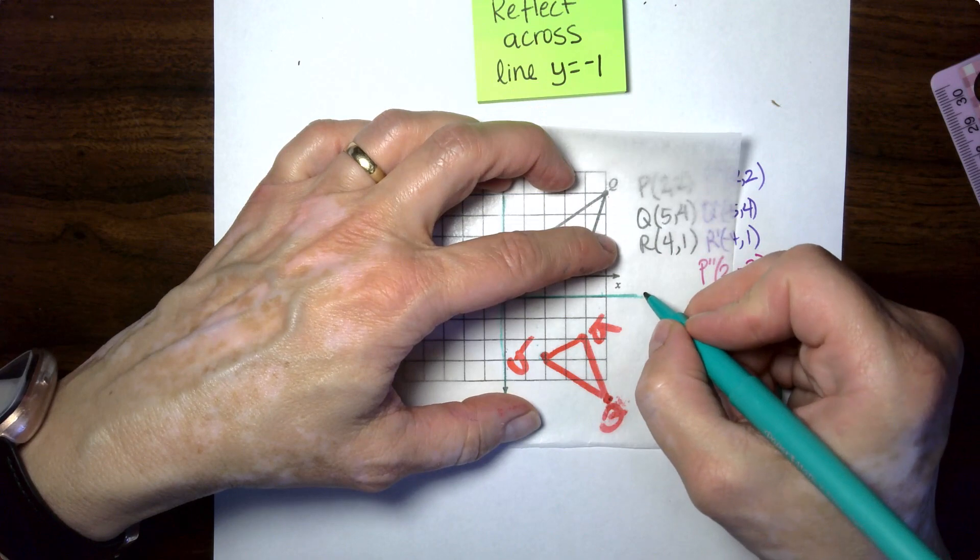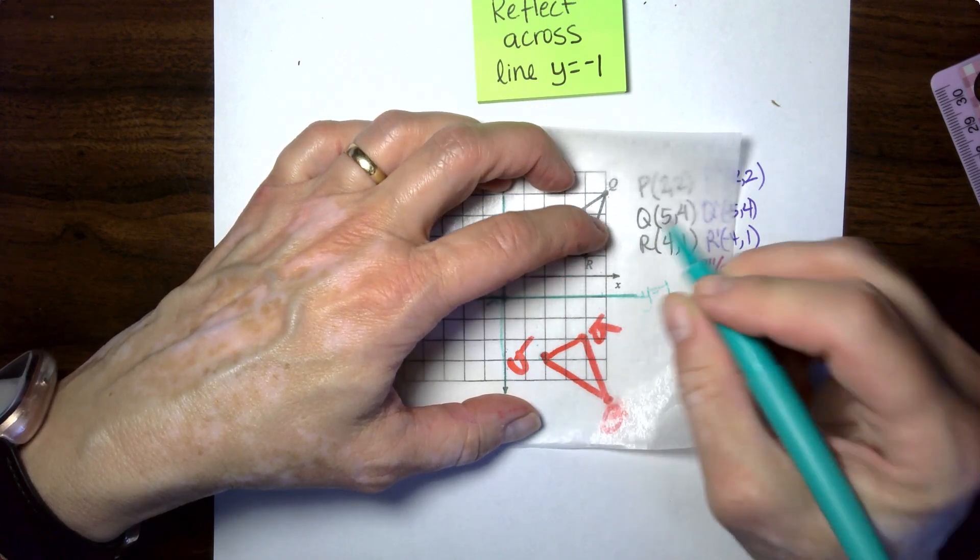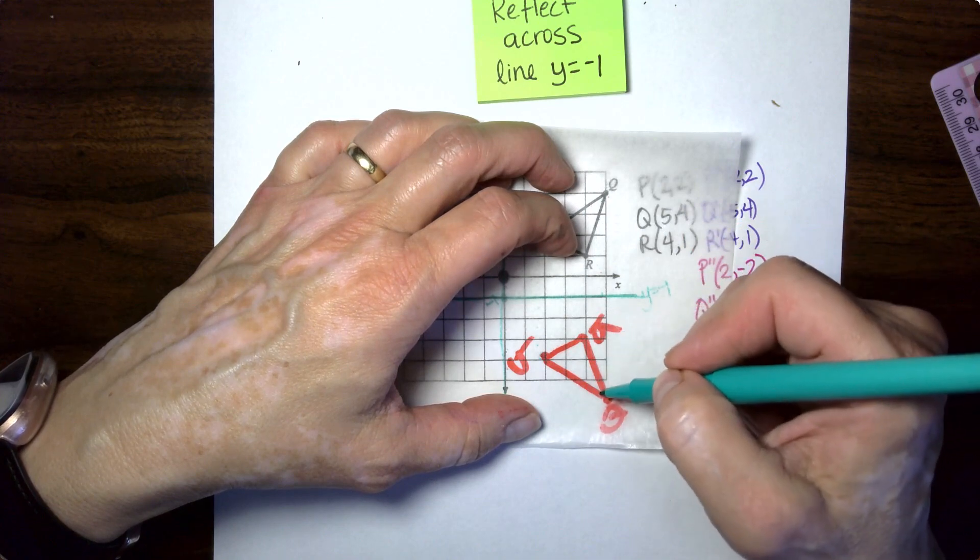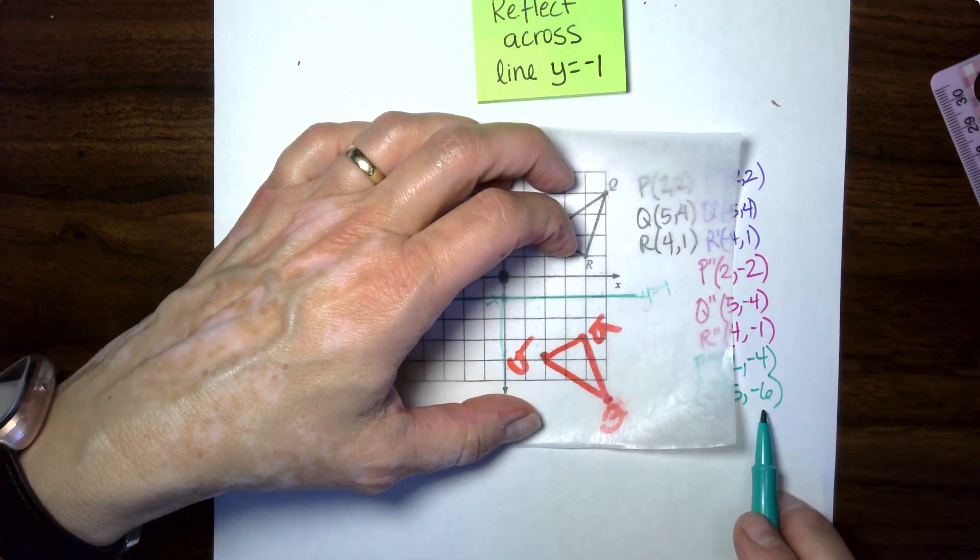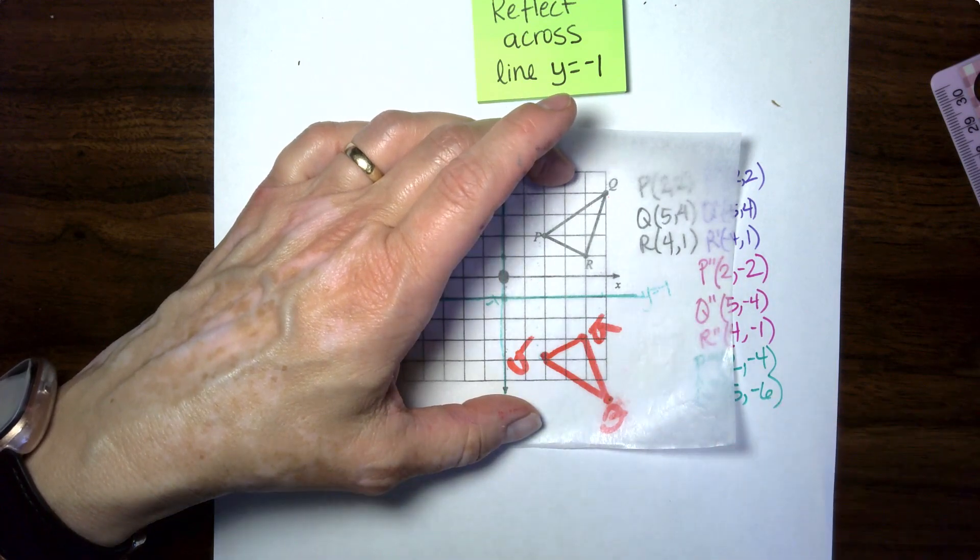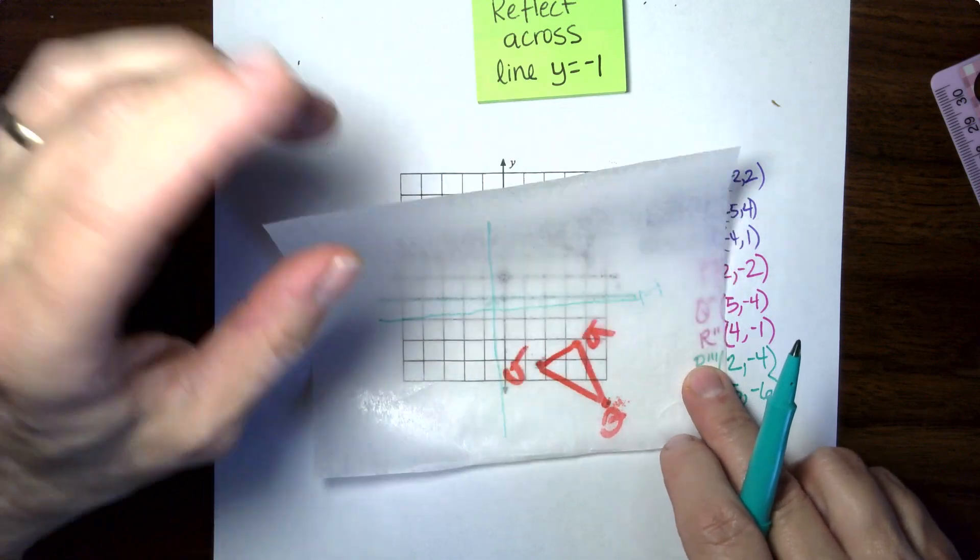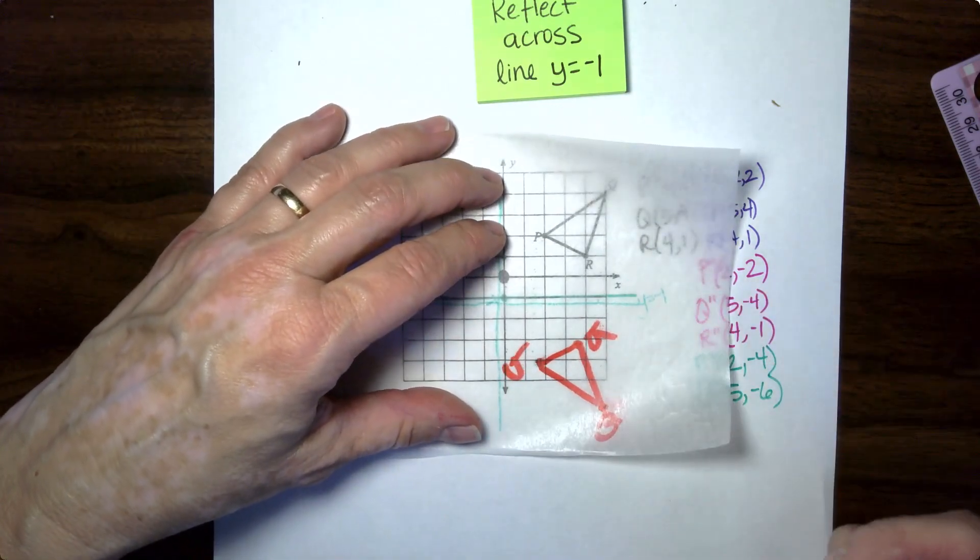So this is negative X equals, no, this is Y equals negative one. This is negative one. So I need it to be five boxes down from there, which would be negative six. I know this is slower and trickier, but this is what you'll be expected to do in class. And it is easier when you can see it.